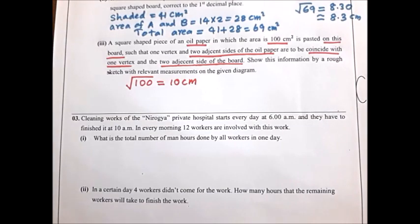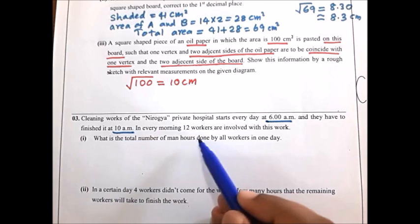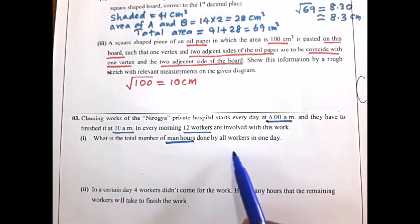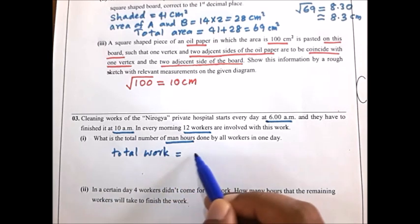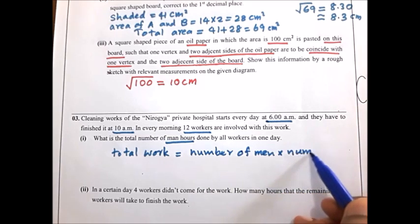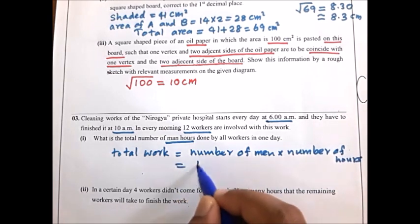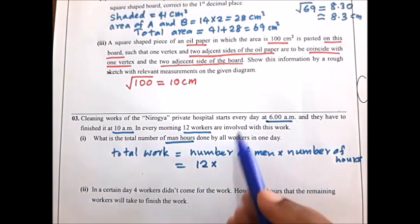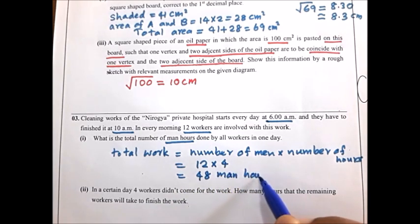Let's start question 4 part 1. Cleaning work at Neurogya Private Hospital starts every day at 6 am and must finish by 10 am. 12 workers are involved. The total work is number of men into number of hours: 12 workers, 4 hours (6 am to 10 am), giving 48 man-hours. This is the answer.